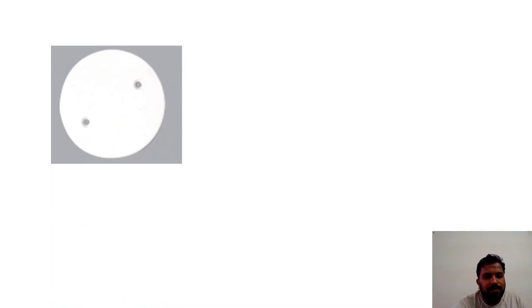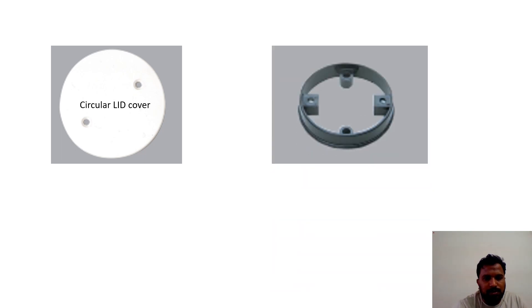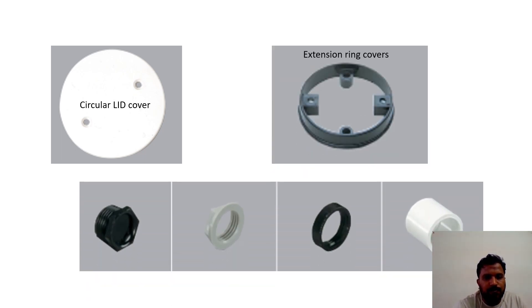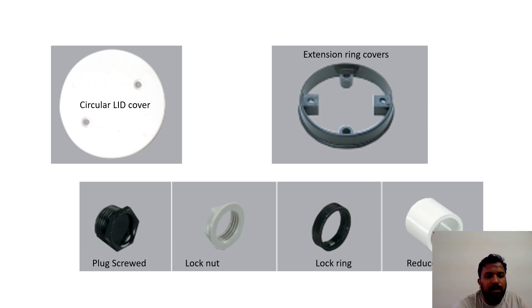We can also see circular lid covers and extension rings. And then we have flex-screw, lock-nut, lock-ring, and reducers.